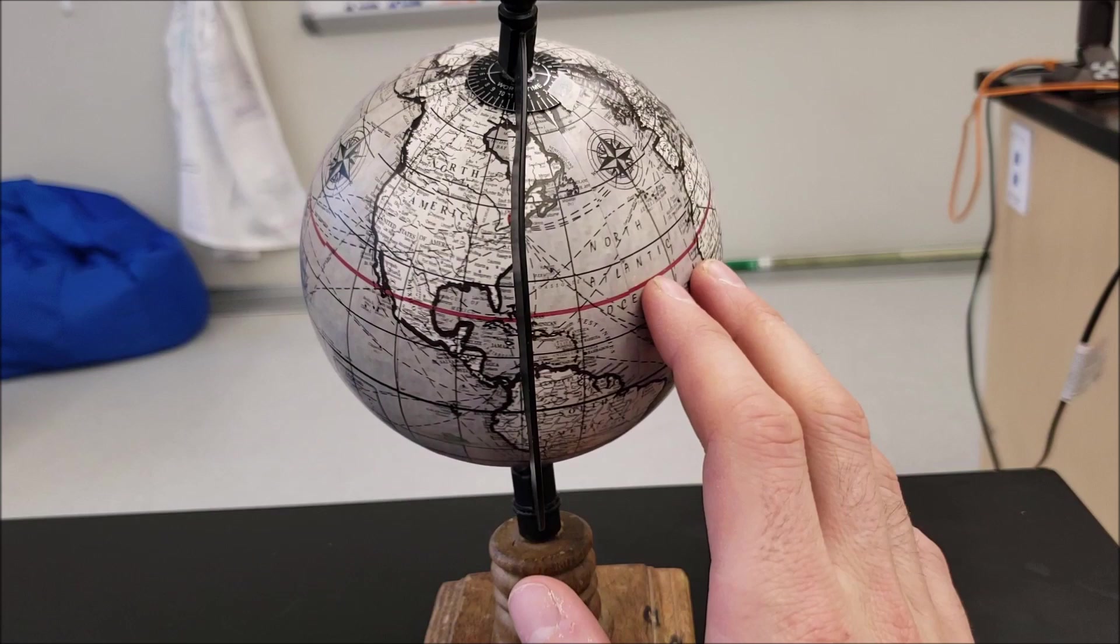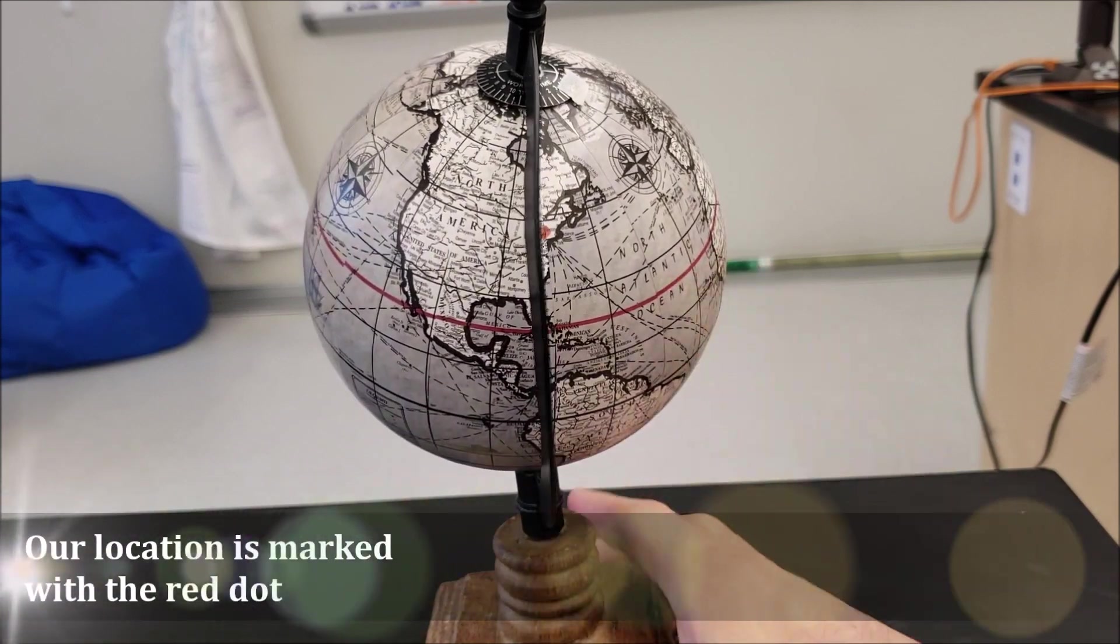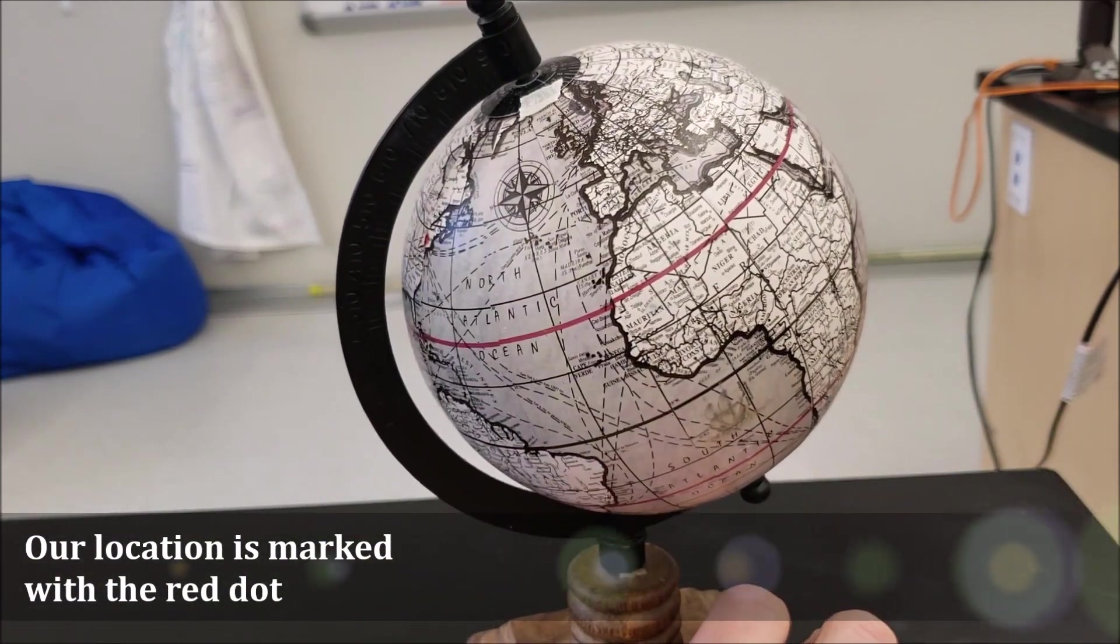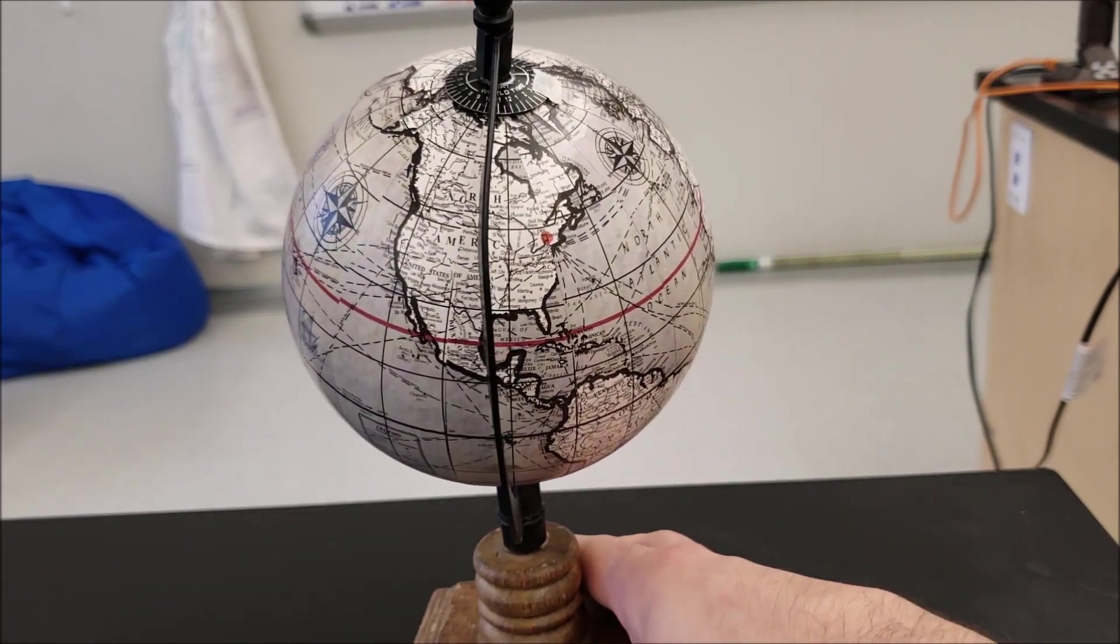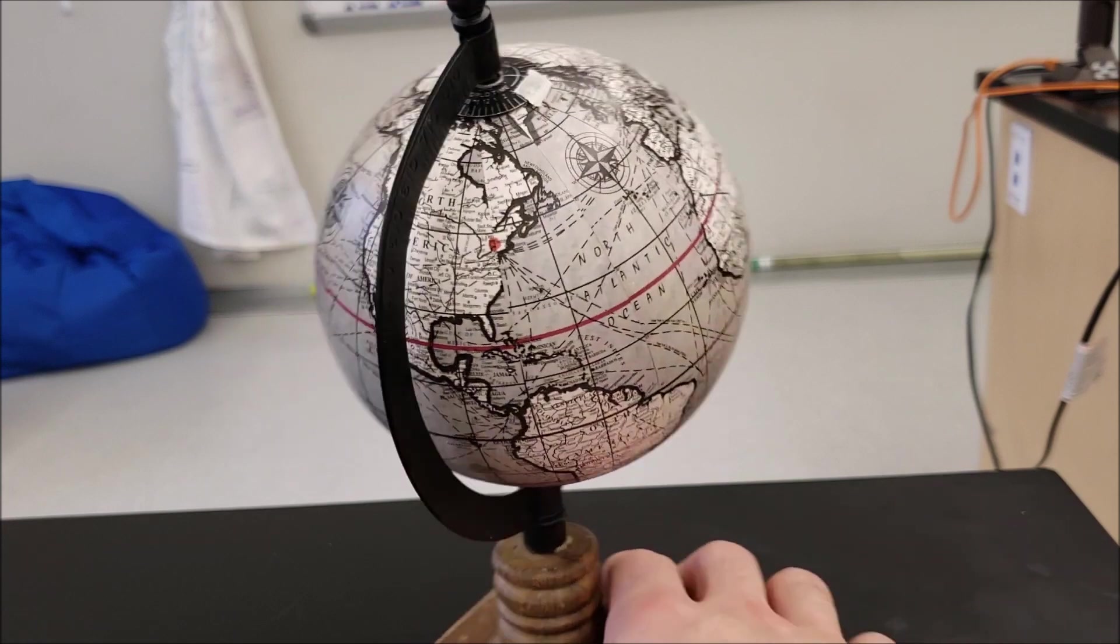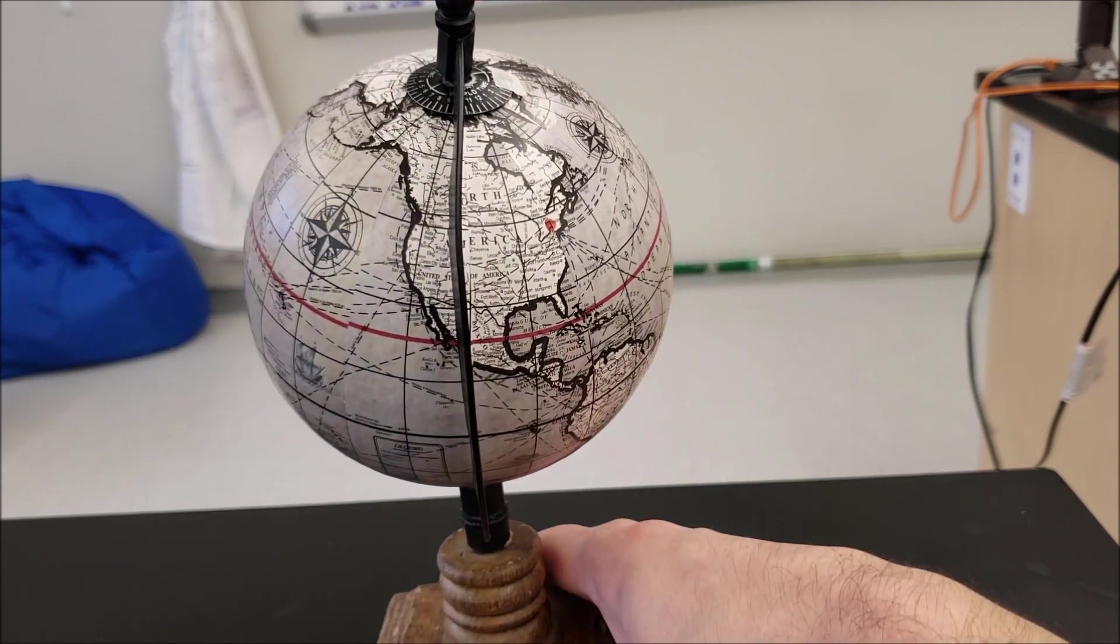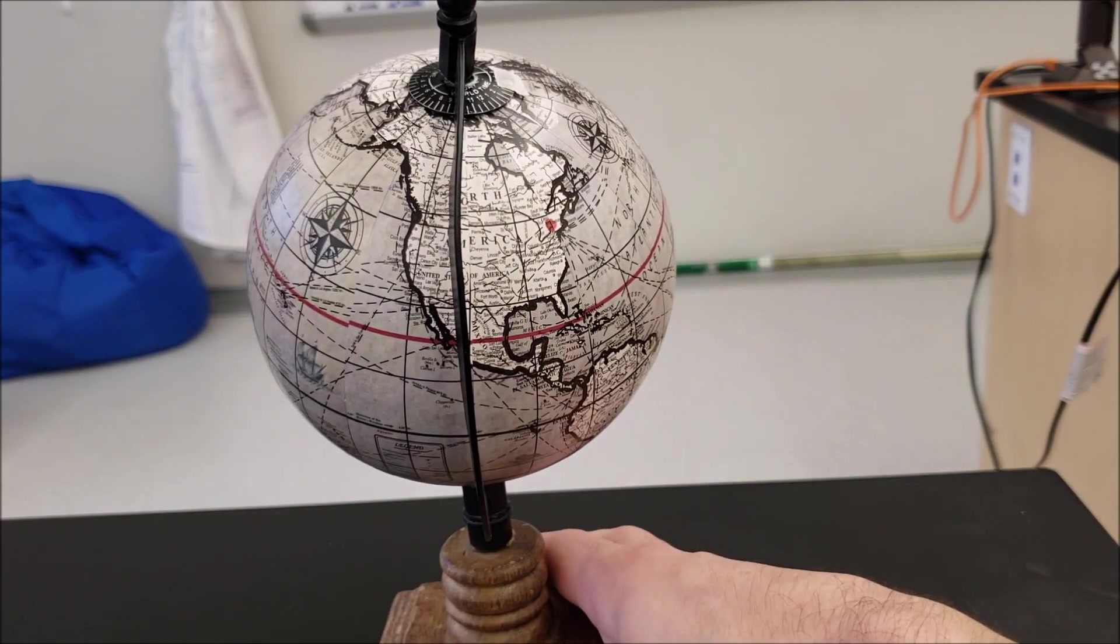So I put a little mark there for our location and I have the axis of the earth tilted towards us. So this is Northern Hemisphere summer. The position that I have is showing where the earth would be in its orbit at the summer solstice.